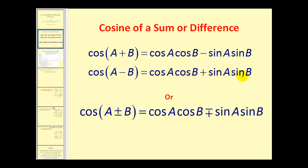Instead of writing this as two different identities, sometimes it's written with a plus-or-minus sign on one side and a minus-plus sign on the other. So if we use the addition sign on the left, we use the subtraction sign on the right, and if we use the subtraction sign on the left, we use the addition sign on the right.